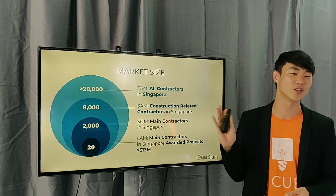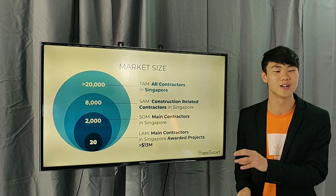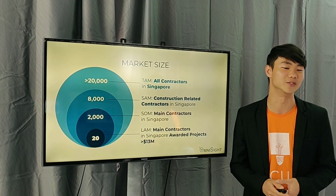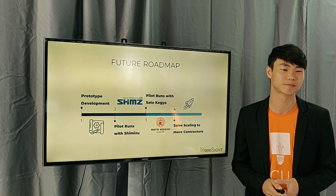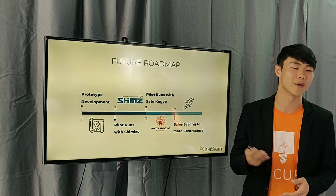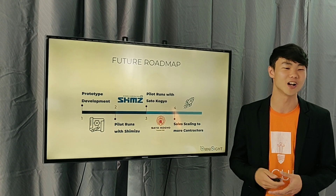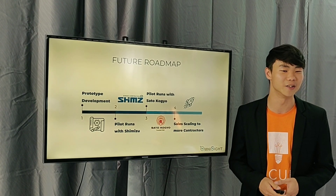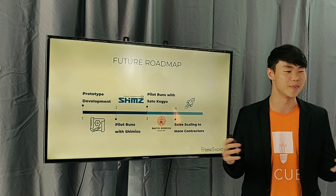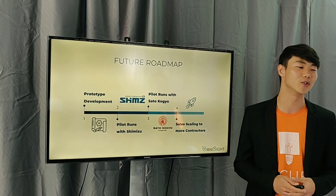The market size is 20,000 contractors, but what we can realistically target immediately is 20 contractors available to us now. Our future roadmap starts with a pilot run with Shimizu, with Mr. Ong helping us close the deal. We'll then expand to Satokogio, a bigger construction company, and after that go abroad.